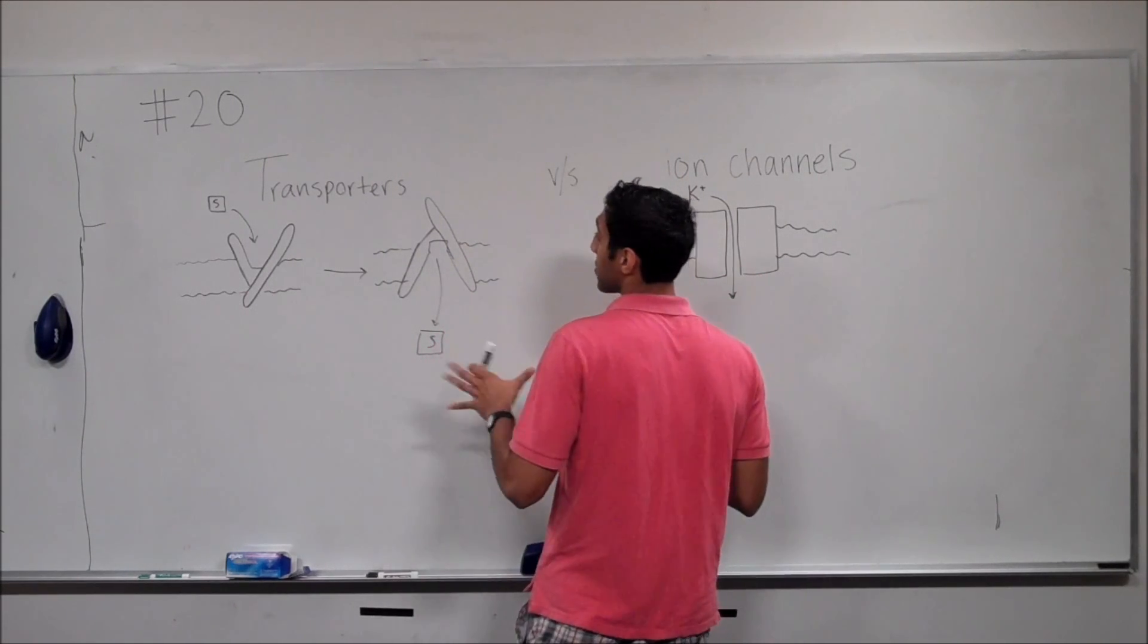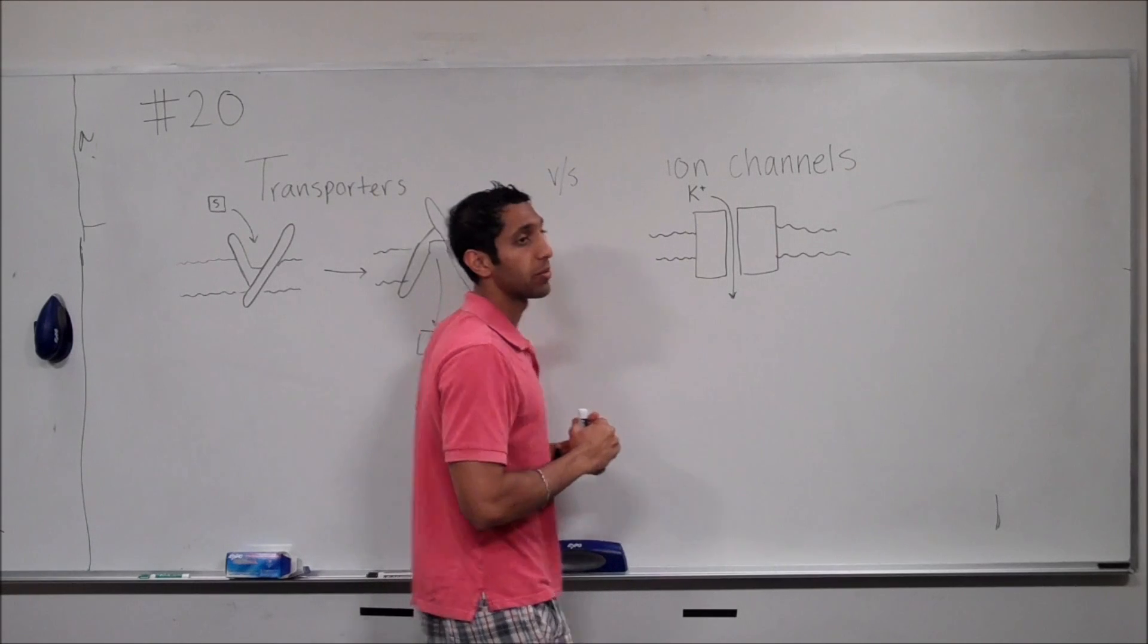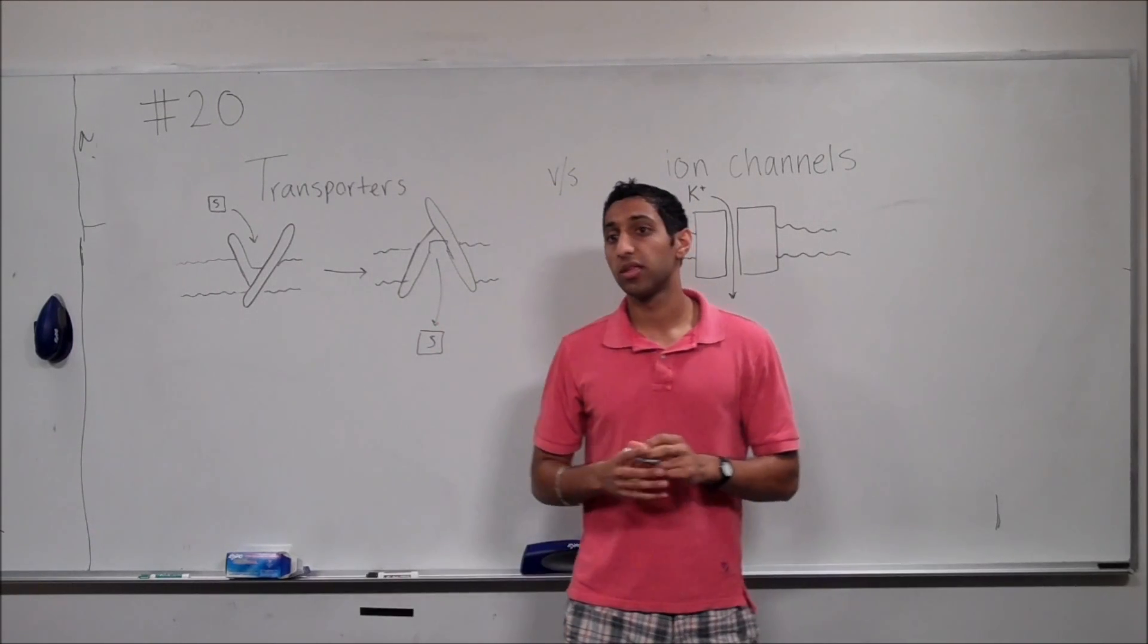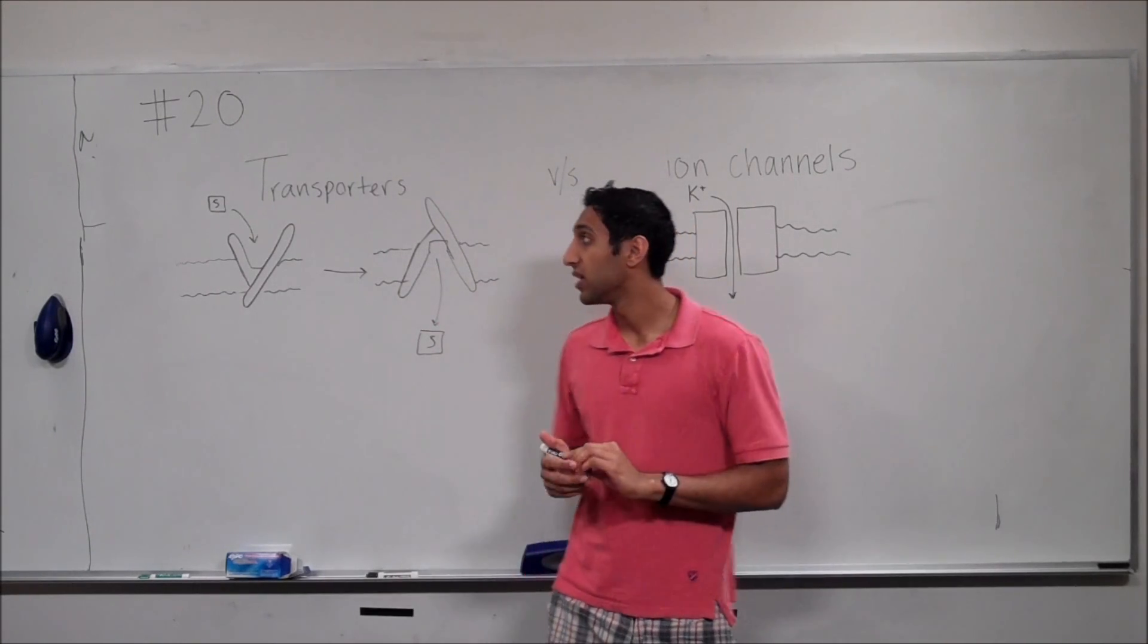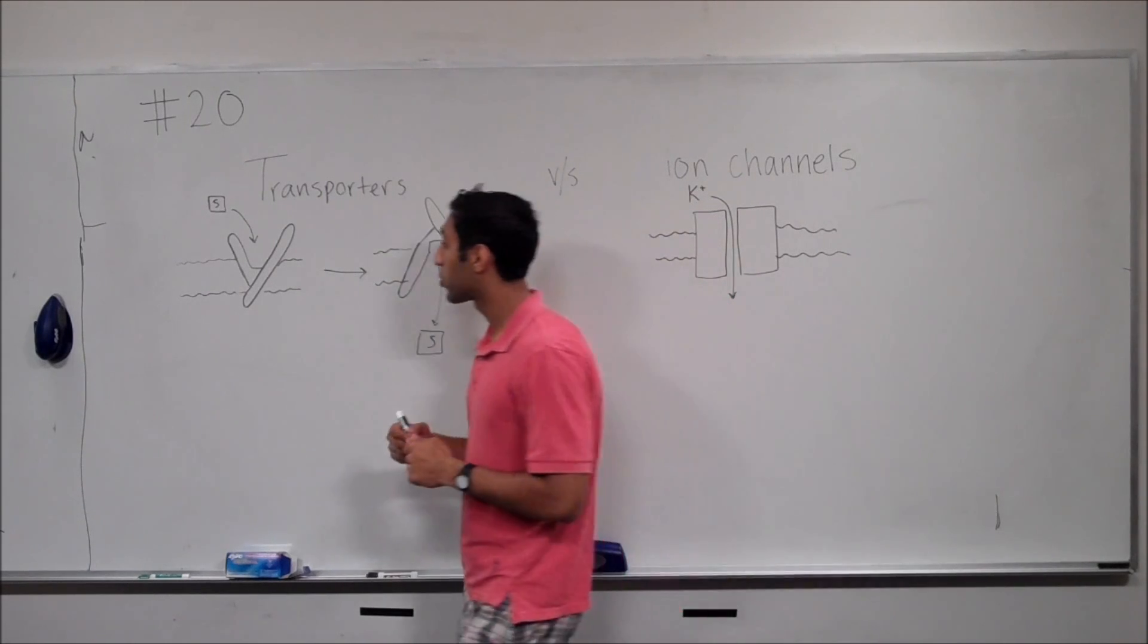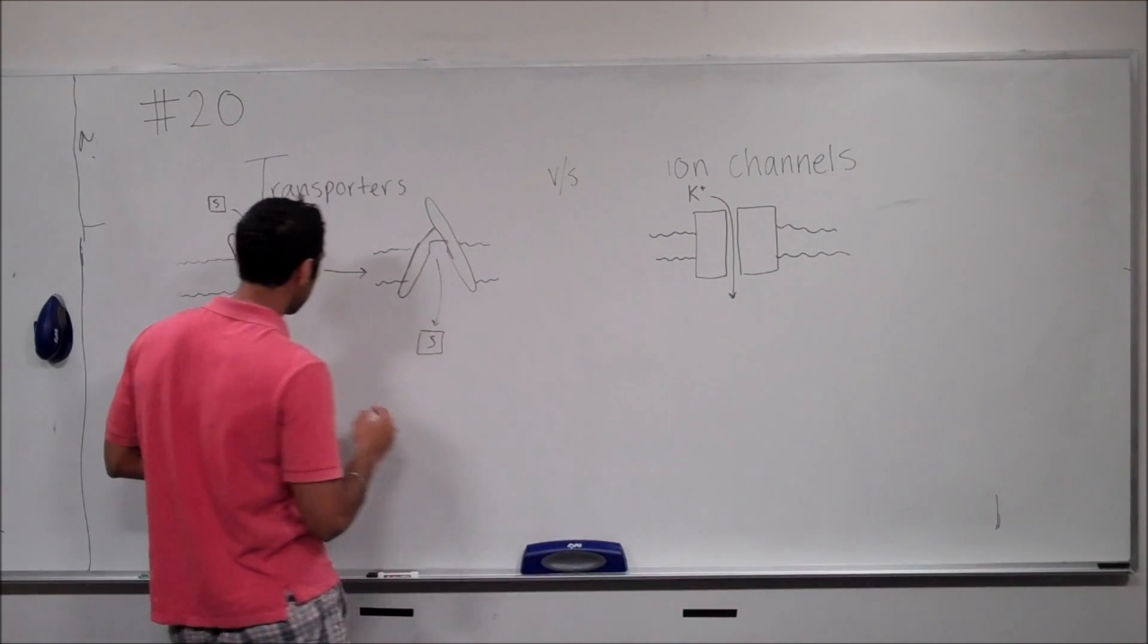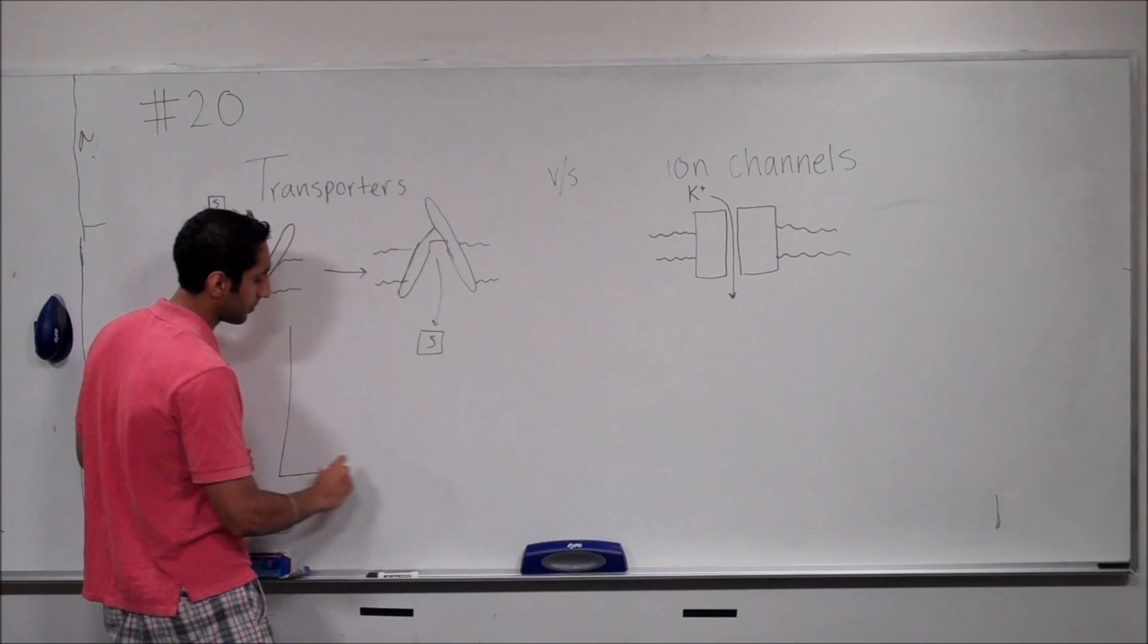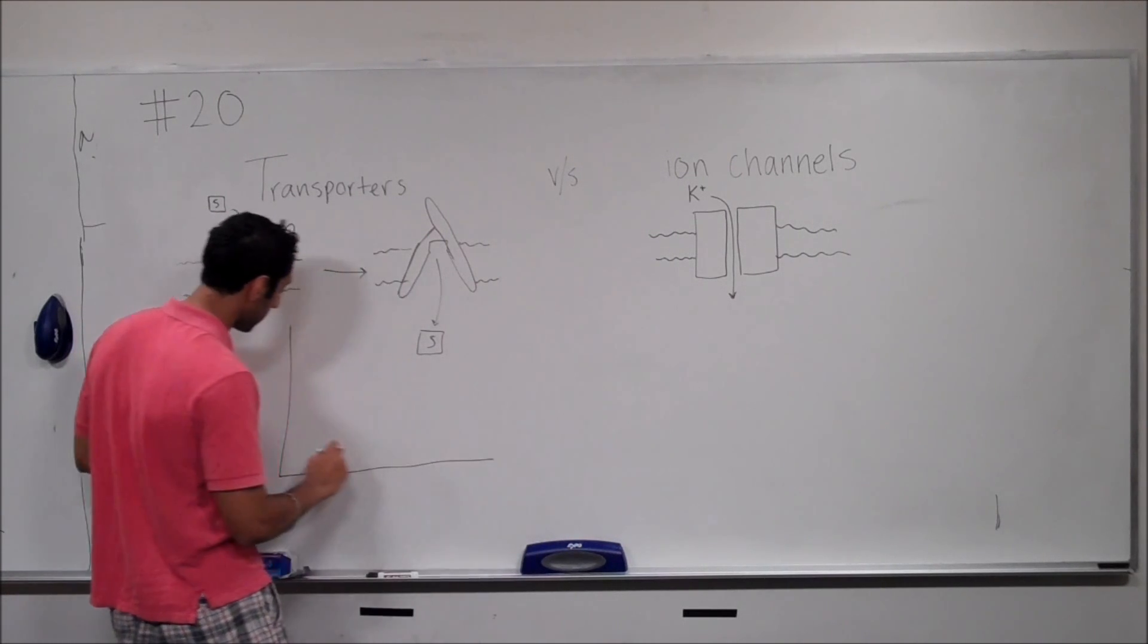But the major properties that set these two apart tends to be Vmax. In the case of transporters, it follows perfectly with Michaelis-Menten properties.